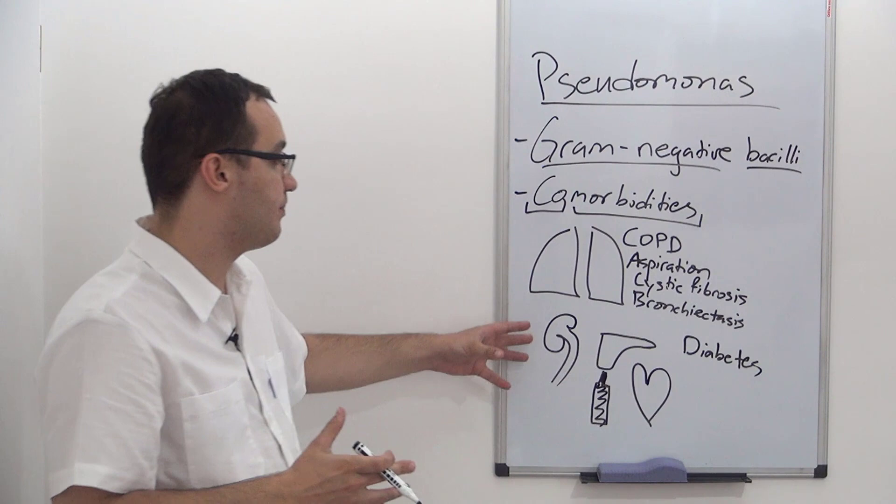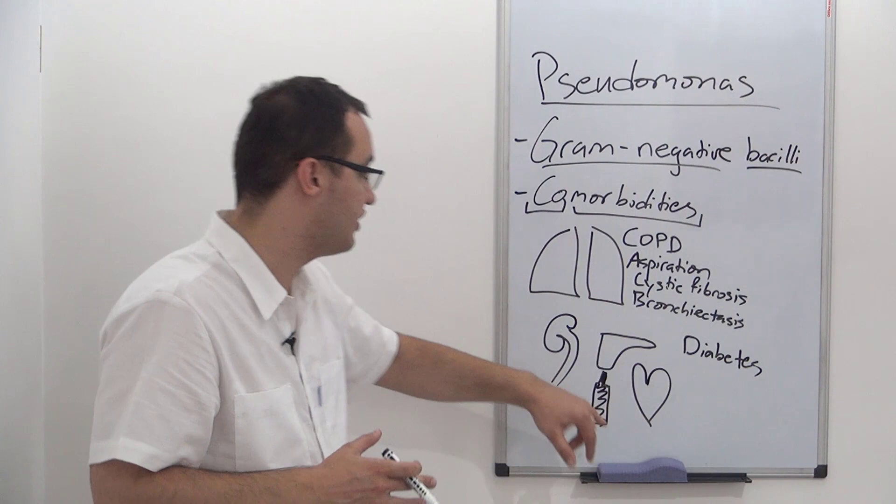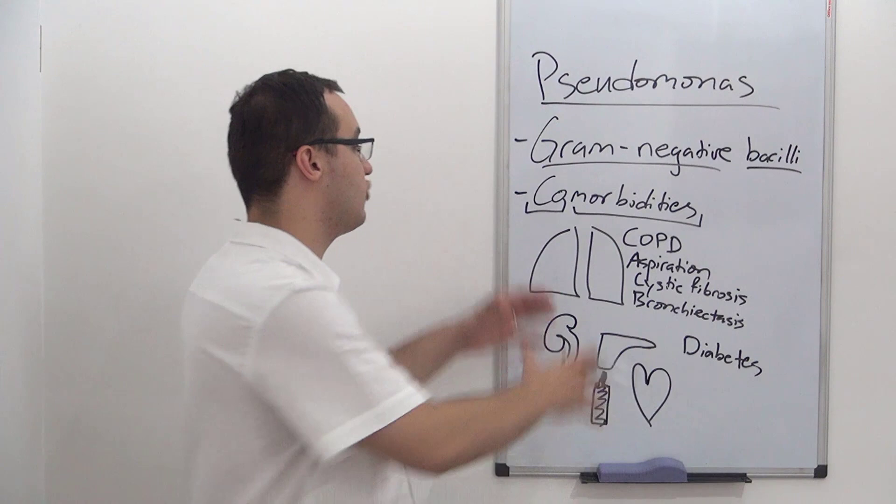So the patient comes in now. And if we have any of these, and this is pretty much covering almost all the diseases. Because we have renal disease, liver disease, heart disease, lung disease, alcoholism, diabetes, and so on.